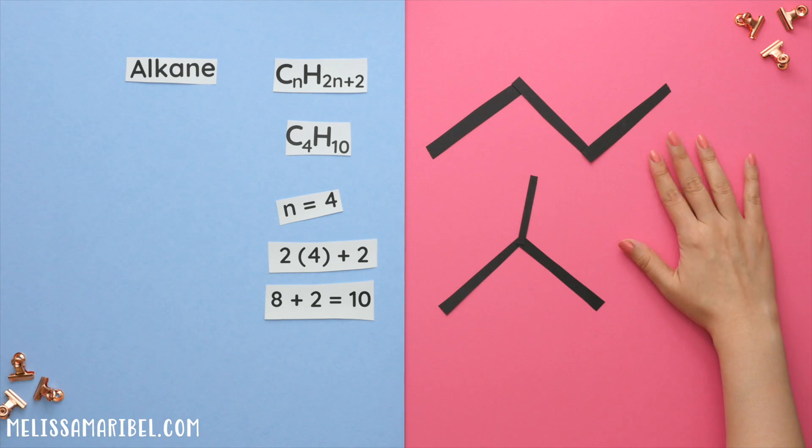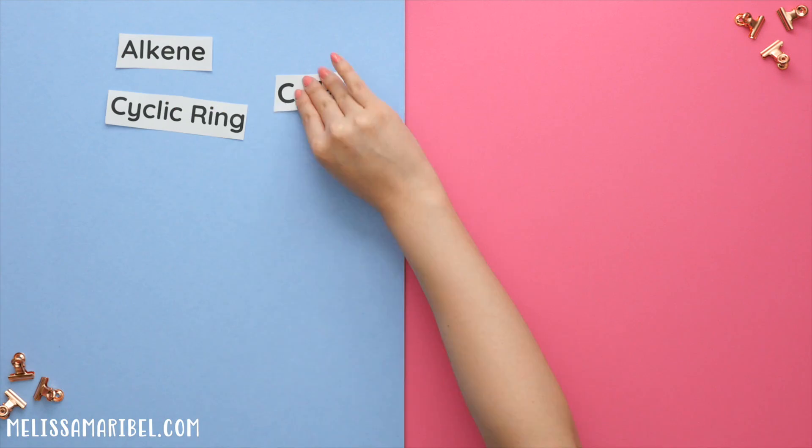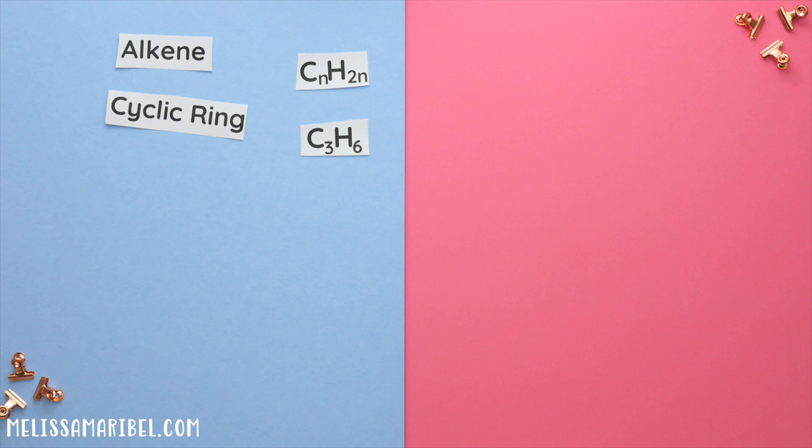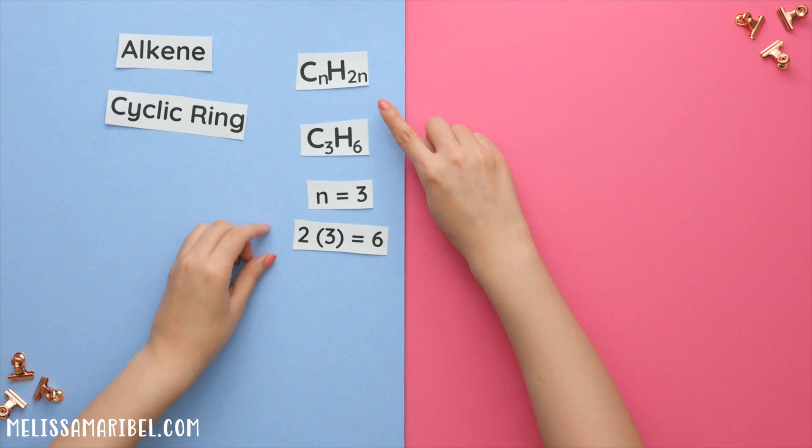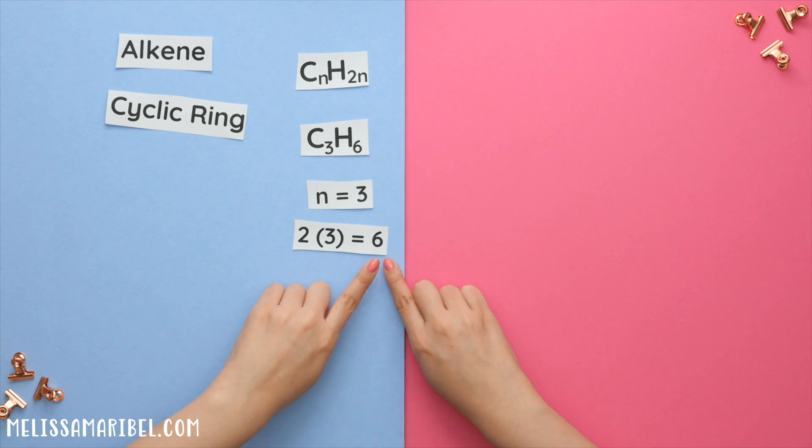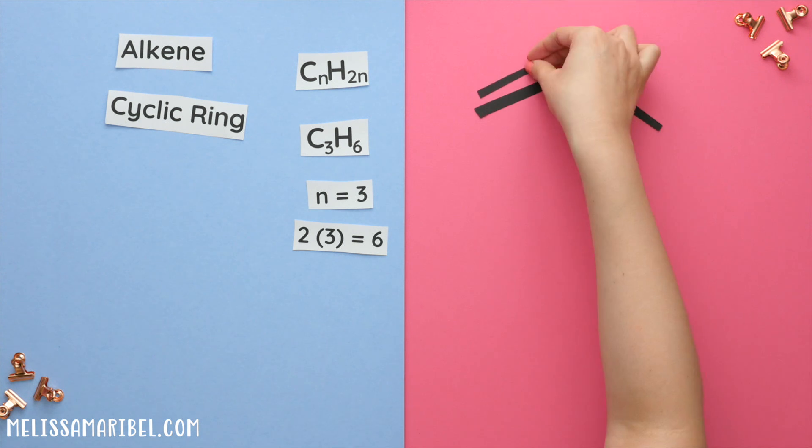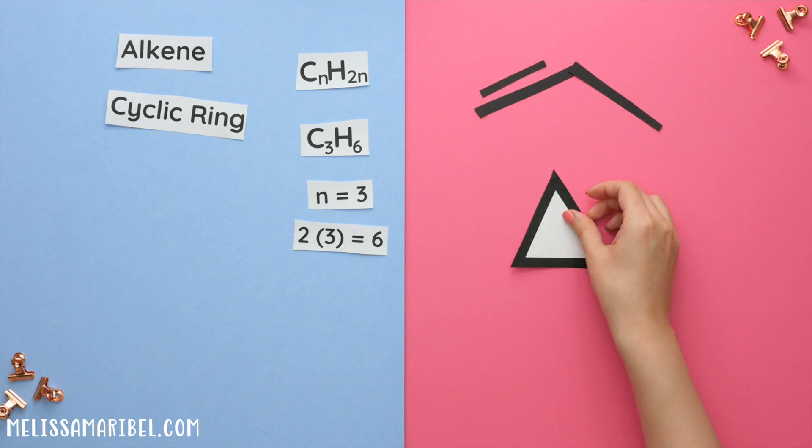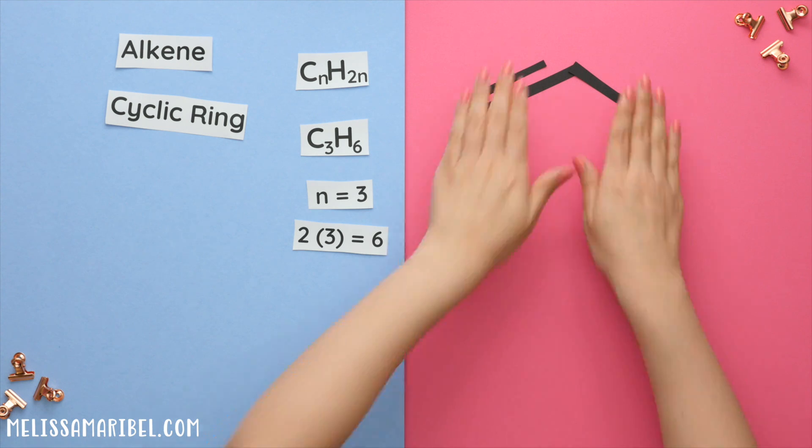For an alkene or cyclic ring, this is our formula. Let's say we had C3H6, where n is equal to 3. And we will plug this into the formula of 2n to get 2 times 3, which is 6. So since it fits with the formula, the constitutional isomers can either be an alkene or a cyclic ring. Let's do two common test questions.